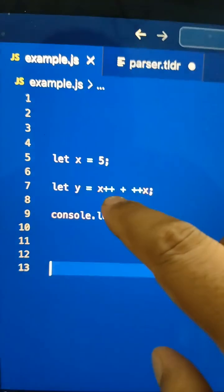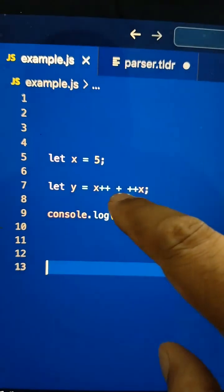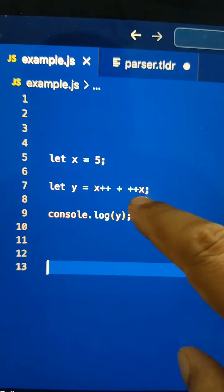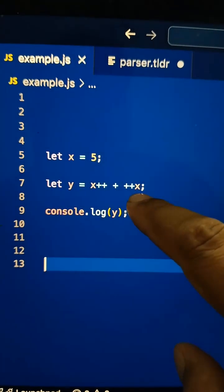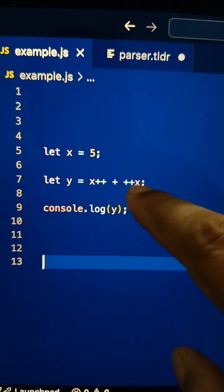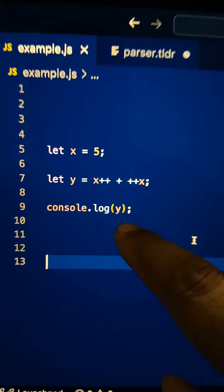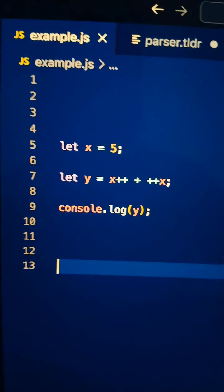Then we have ++x, a pre-increment, so 6 will become 7. So 5 plus 7 is going to be 12. Let me show you the output - as you can see, it is 12.